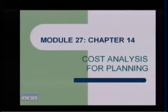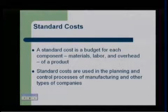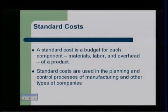Welcome to module 27 of Accounting 5000. In module 27 we're going to continue with chapter 14. You may remember the first part of chapter 14 we talked about budgeting, and what we're going to do in the second part of chapter 14 is do a budget for a particular unit of product. We're going to call that standard cost — the standard cost of materials, labor, and overhead — and it's simply a budgeting technique we use for each product that we make.